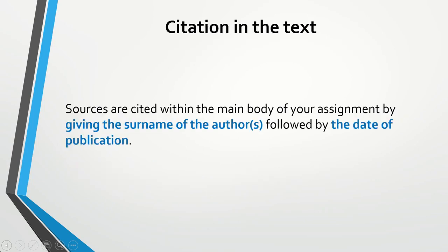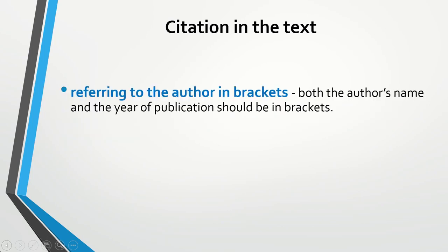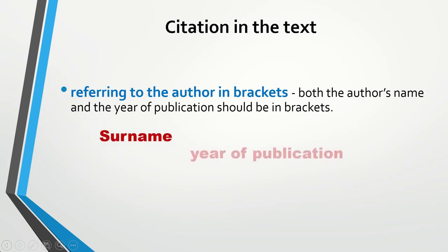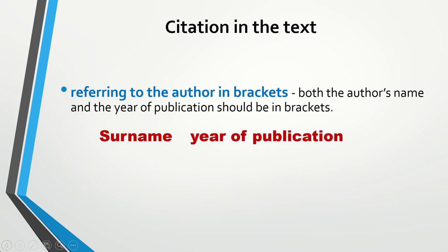Let's talk about in-text citations first. Sources are cited within the main body of your work by giving the surname of the authors followed by the date of publication. There are different ways of doing this. For example, you can refer to the author in brackets. In this case, you have the author's surname, a year of publication, there is a comma between the two, and they are included in brackets.